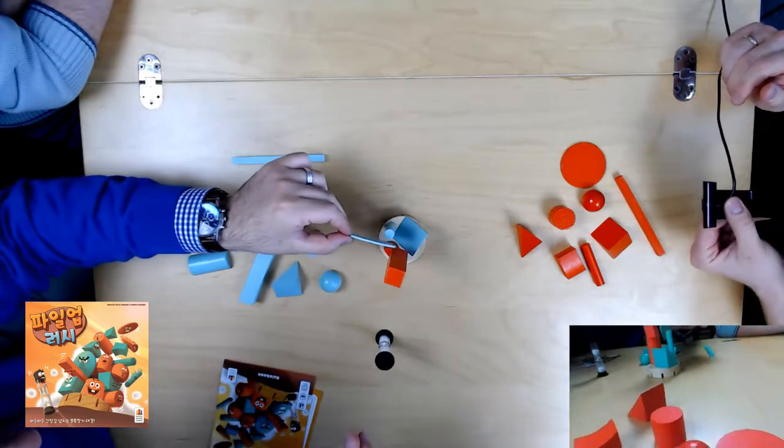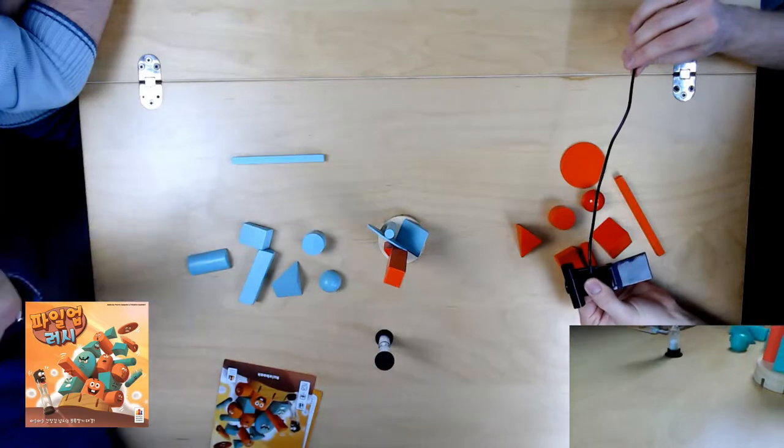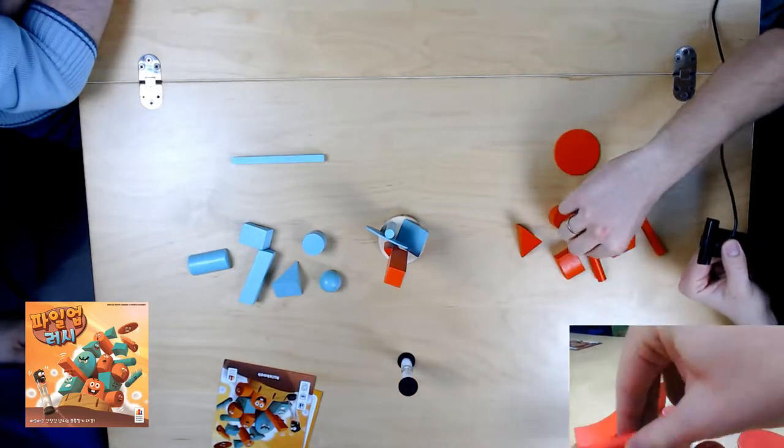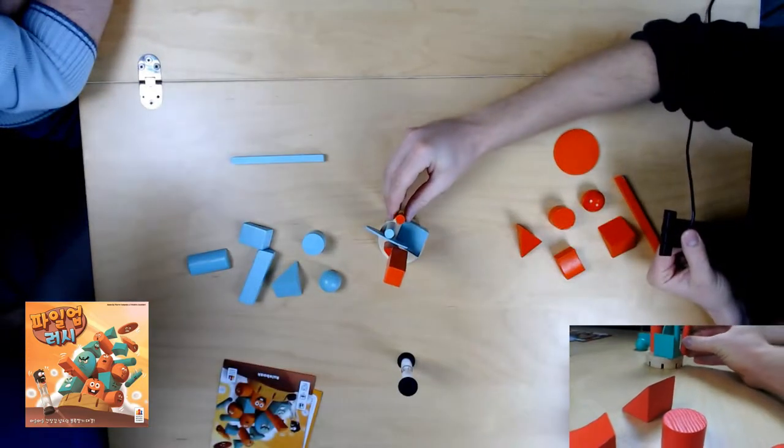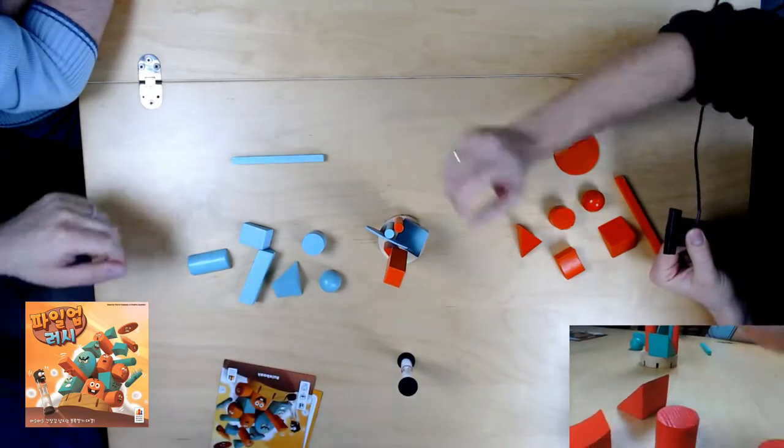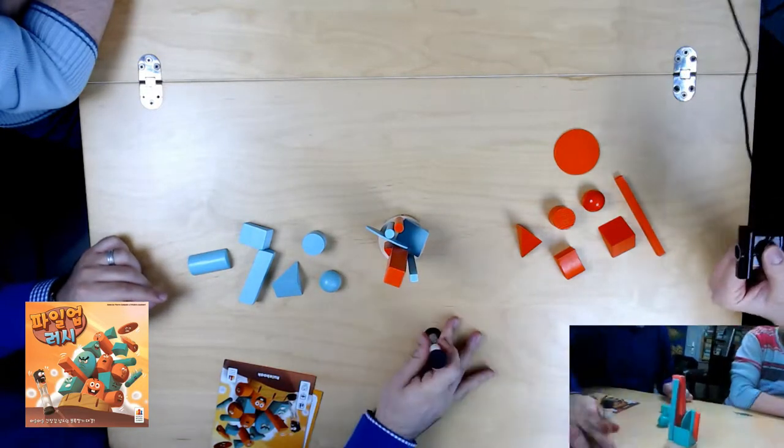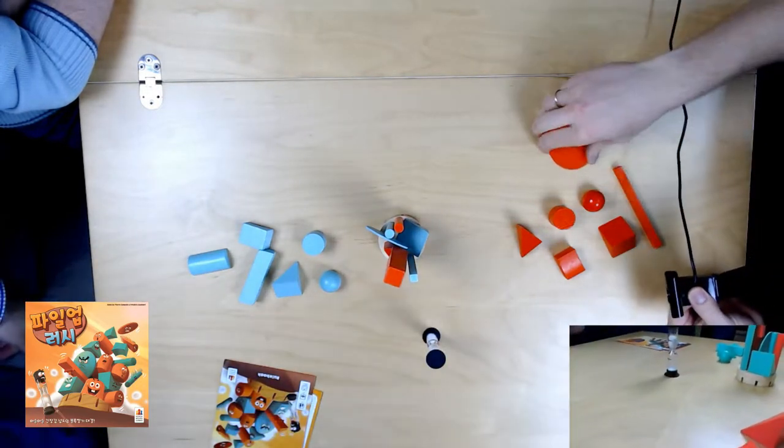So, there's some kind of push your luck. You can choose to just place one, and put the time pressure on the other team, or you can try to place more. If you get rid of all of your pieces, you win the round. But, typically, the round ends when somebody bumps something. This is epic.